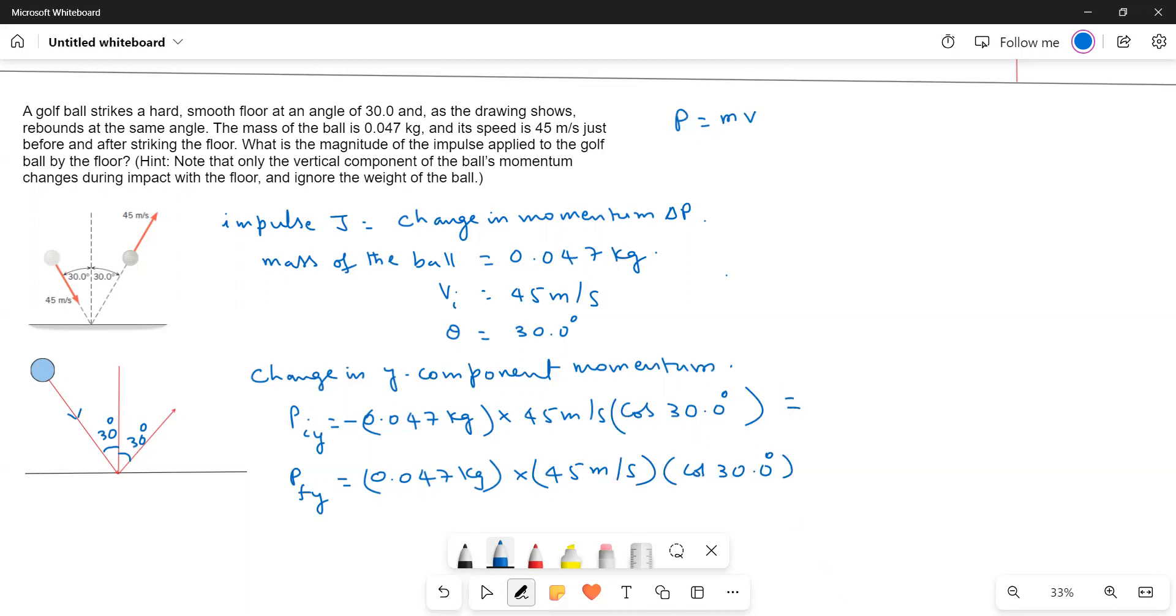What is the value of this one? 1.8316 kilogram meter per second. It is negative because downward direction and then this is positive because upward direction.